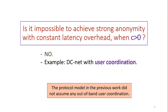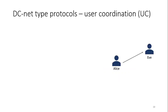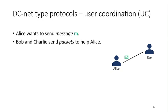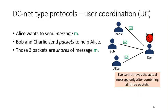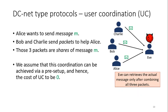Let's look more closely at what user coordination is. Suppose Alice wants to send a message to Eve, but Alice doesn't work alone — Bob and Charlie also help. Each of Alice, Bob, and Charlie sends one packet to Eve, and Eve can only reconstruct the message from Alice after receiving all three packets. We call those packets shares. We are not talking about secret sharing specifically; user coordination refers to all techniques that can achieve such an effect. We assume user coordination can be achieved via pre-setup, and hence the cost of user coordination is zero.